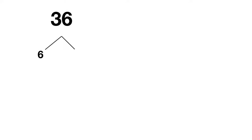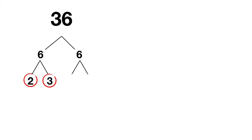Let's do one of these together. Let's start by prime factoring 36, which we can split up into 6 times 6. Are either of these prime numbers? No, both of them can be split up further. This 6 we can split into 2 times 3 — those are prime. And the other 6 gets split into 2 times 3, so both of those are prime.